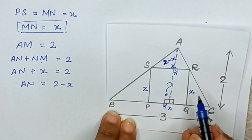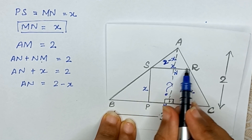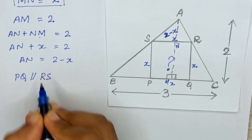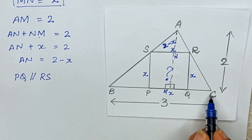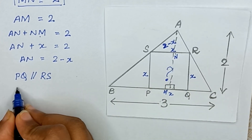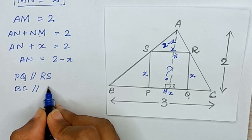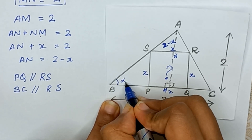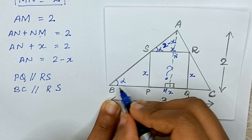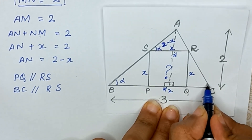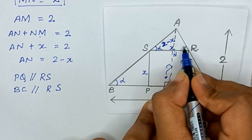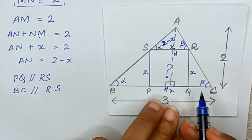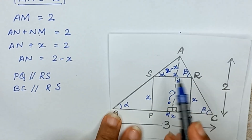Since PQRS is a square, PQ is parallel to RS. Also, BC is parallel to SR. Because of these parallel lines, corresponding angles are equal. We name the angle at S as alpha, and the angle at R as beta.